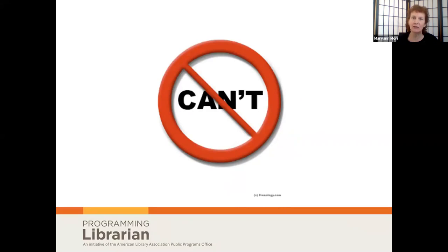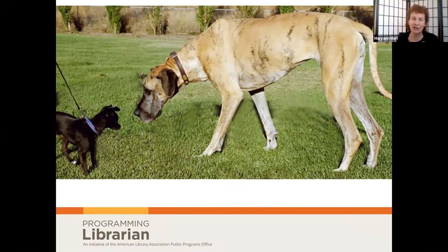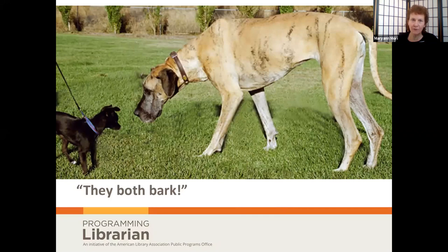I'm hoping to eliminate the word 'can't' from your vocabulary when it comes to library services. I was sharing with a friend about this presentation and he innocently asked, 'What's the difference between big and small? I have two dogs — one's big and one's small, and they both bark.' What a great lesson — because regardless of your library's size, small or big or in between, all of our libraries can bark. They can all serve their communities and serve them well.